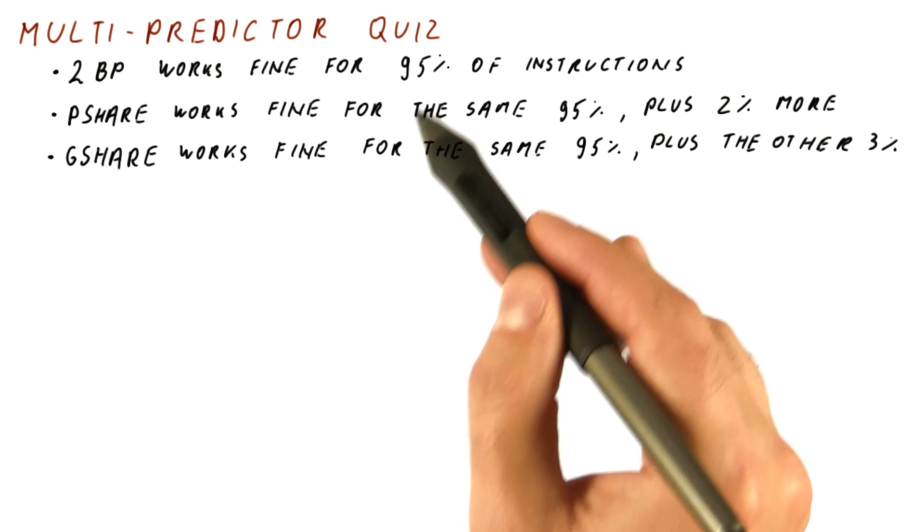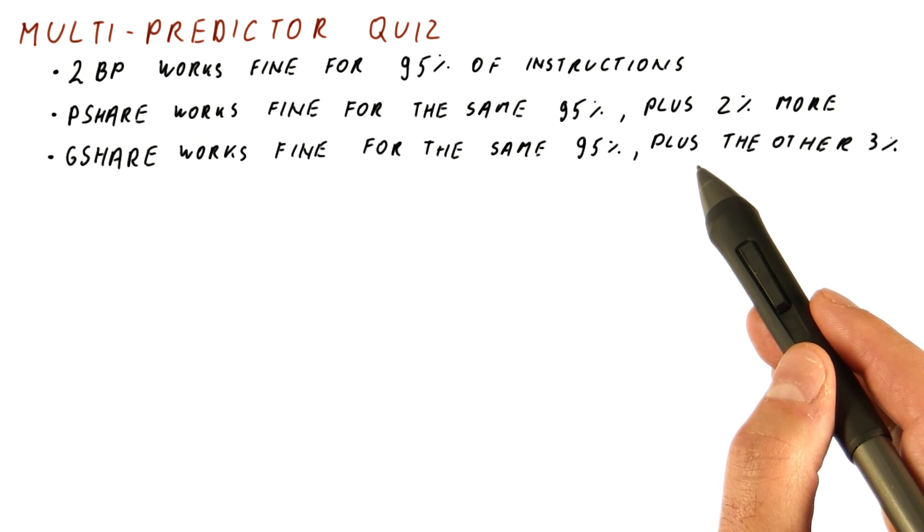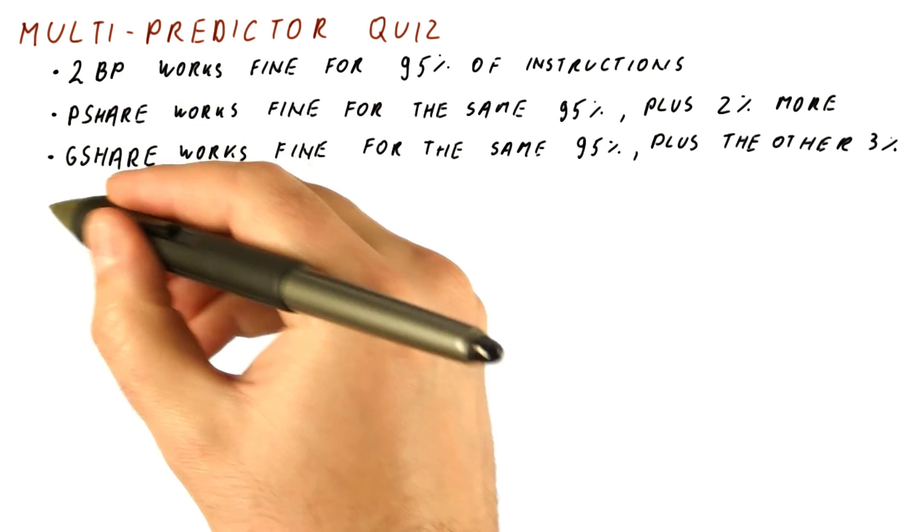So together these three predictors should be able to correctly predict all instructions. The question for you is, how do we combine them?